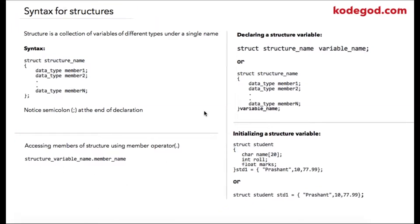A structure is a collection of variables of different data types, as compared to an array which is a collection of similar data types. Inside of a structure you can have a collection of variables of data type int, float, character, and so on.